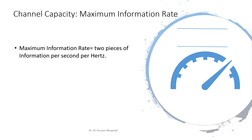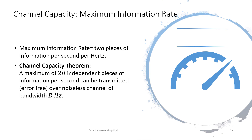The channel capacity theorem says the maximum amount of information rate is equal to two pieces of information per second per hertz. Formally, the theorem states: a maximum of 2B independent pieces of information per second can be transmitted error-free over a noiseless channel of bandwidth B hertz. It simply says that if you are given a certain bandwidth — whether a wire, wireless channel, or fiber optics — you cannot transmit at whatever rate you want. There is a theoretical limit, and that limit is twice the bandwidth.